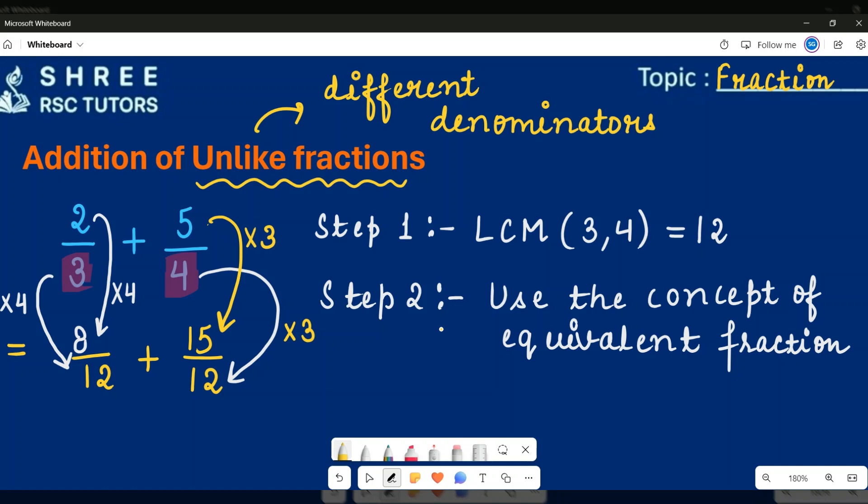Now see, both of the fractions have become like fractions because both of them are having same denominator. And it's very simple to add like fractions. You just need to keep the denominator same and add the numerators together. So if you add 15 and 8, you will get 23 and the denominator will stay the same. So your final answer will be 23 twelfths.